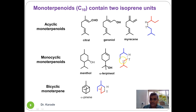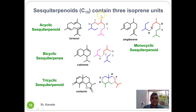In monocyclic and bicyclic monoterpenoids, head-to-tail linkage is not immediately obvious, but when we discuss the biosynthesis of monoterpenoids we will realize that first head-to-tail coupling occurs enzymatically, followed by cyclization through other enzymatic transformations. In sesquiterpenes, three isoprene units are joined. Acyclic, monocyclic, bicyclic, and tricyclic structures all exist. In acyclic sesquiterpenoids two head-to-tail linkages are present, and in sesquiterpenoids generally we find at least two head-to-tail linkages.